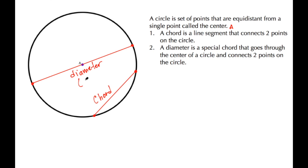A diameter is also a chord, just a special type of chord. The next characteristic or part of a circle we want to talk about is a radius. A radius is a line segment.